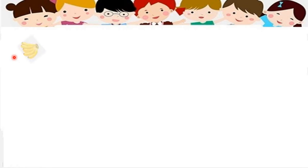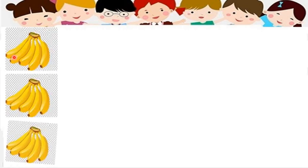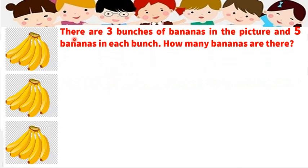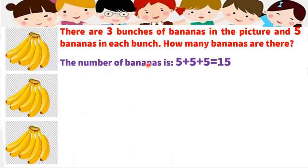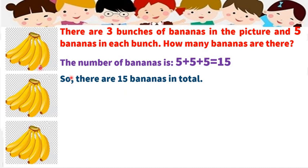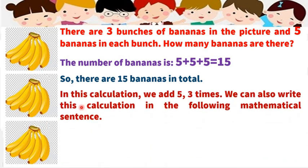My dear students, look at these pictures. These are pictures of three bunches of bananas. There are three bunches of bananas in the picture and five bananas in each bunch. So how many bananas are there? The total number of bananas is 5 plus 5 plus 5 equals 15. There are 15 bananas in total. In this calculation, we add five three times.